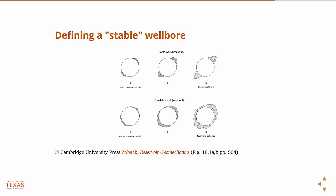A stable wellbore is not necessarily one with zero breakout — there's some acceptable amount of breakout and you can still have a stable wellbore. Just because you see breakouts doesn't necessarily mean the wellbore is unstable. An unstable wellbore is defined by the lack of ability to remove the solids with the mud. An unstable wellbore will eventually lead to wellbore collapse, where the entire radius of the wellbore fails and can literally collapse in on the drill bit.